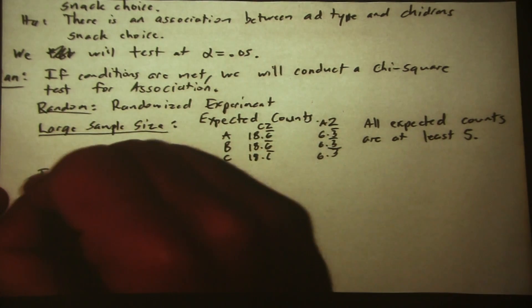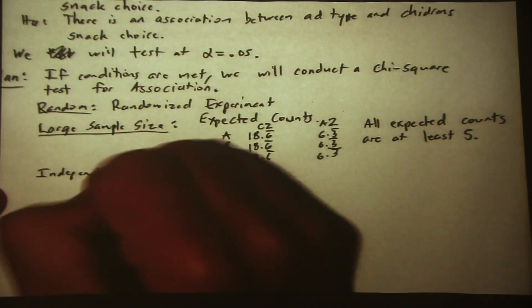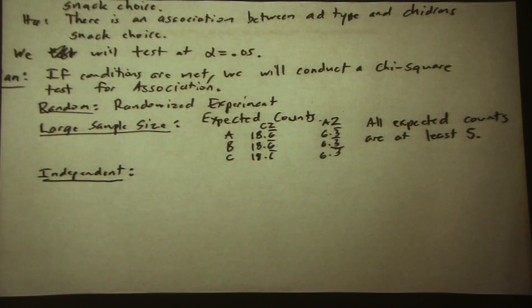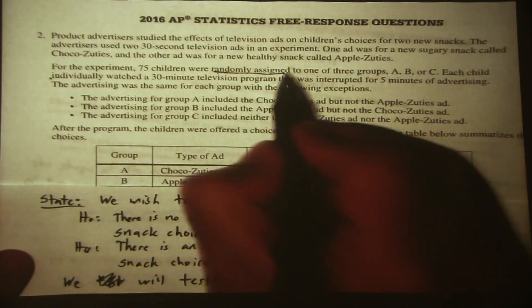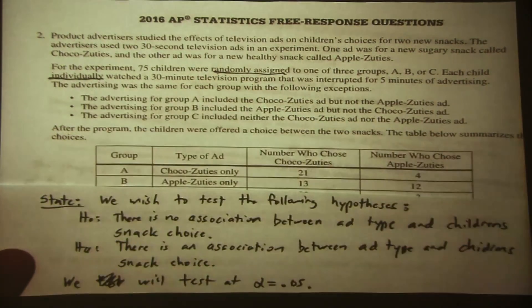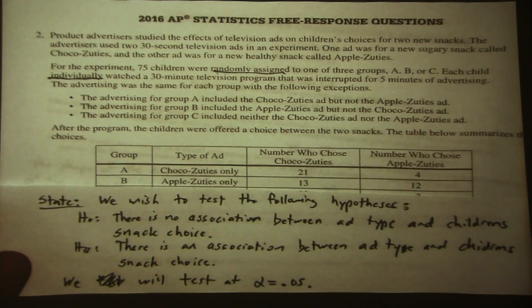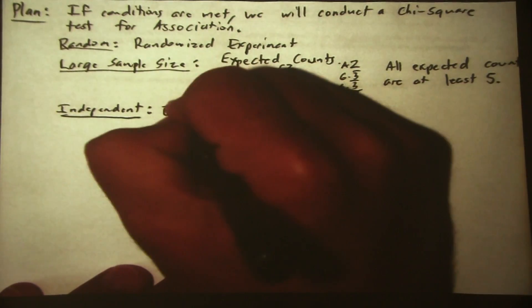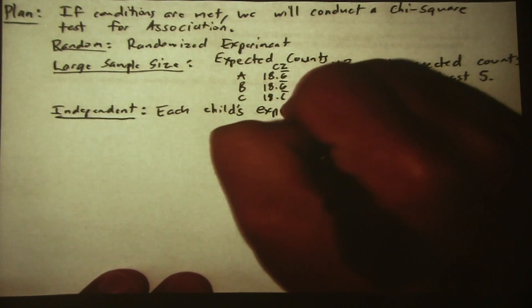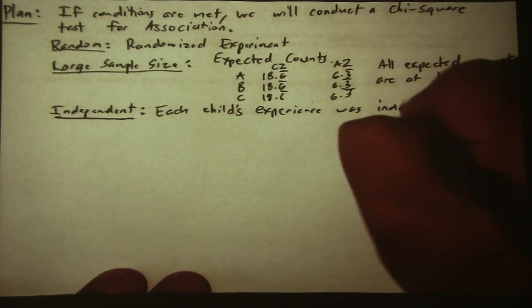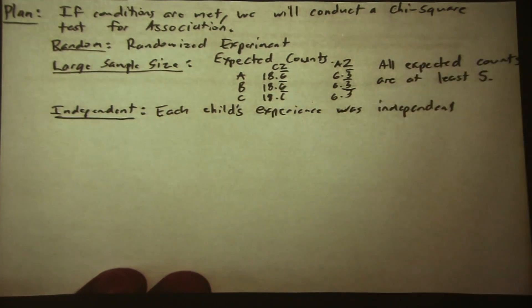Our last condition is independent. In this case, this has nothing to do with the 10% rule — this is a randomized experiment, so we're not sampling. What's most important to check for the independence condition is that the kids were randomly assigned to each of the three groups and they individually watched the 30-minute program, so we have no reason to expect they would be affecting each other. Each child's experience was independent of the others.